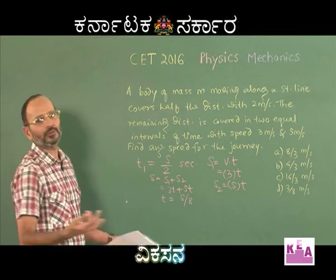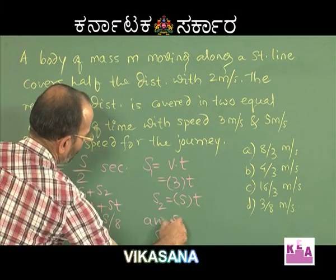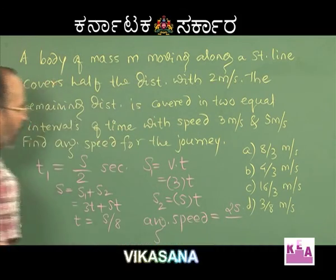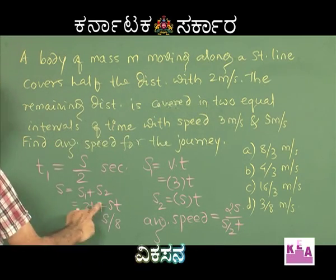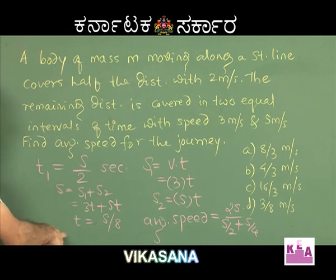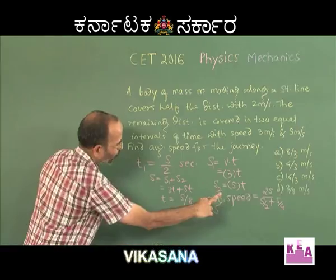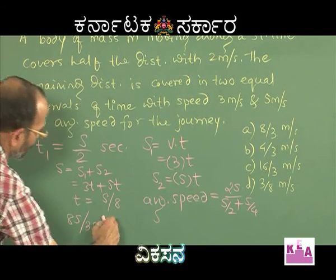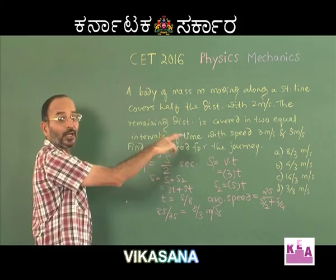Now I know total time and total distance, so average speed = total distance ÷ total time. Total distance = 2s. Total time = s/2 (first half) + s/8 + s/8 (two equal intervals) = s/2 + s/4. Taking LCM of 4 in the denominator: numerator becomes 8s, denominator becomes 2s + s = 3s. The s cancels and the answer is 8/3 meters per second, which makes option A perfectly correct.